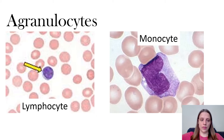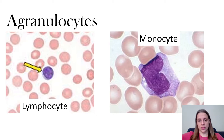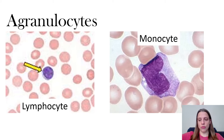For the agranulocytes, if you decide it's not a granulocyte then you need to look at the size. Lymphocytes are about the same size as a red blood cell, whereas monocytes are gigantic — about four to five times the size of a red blood cell.